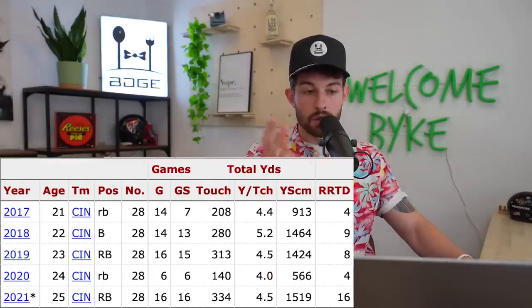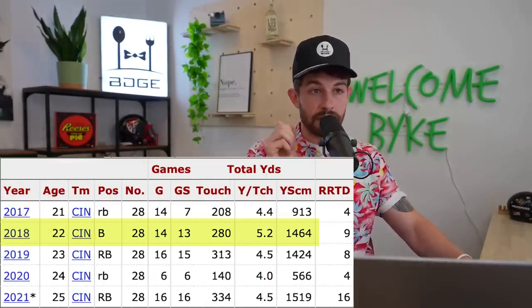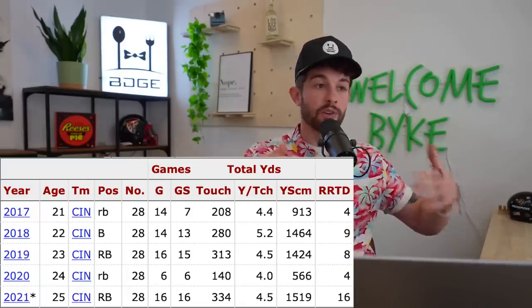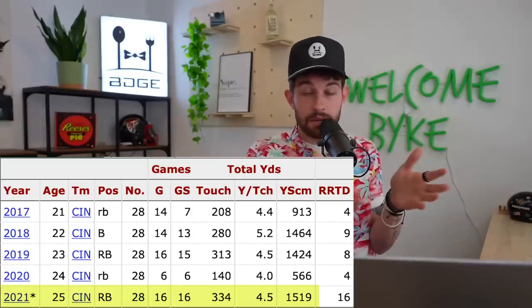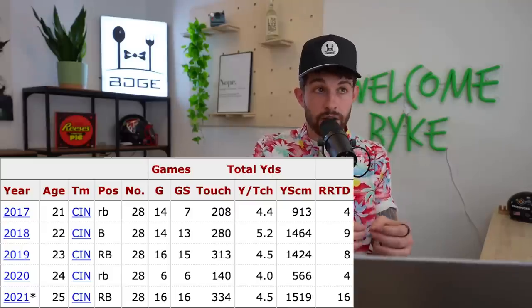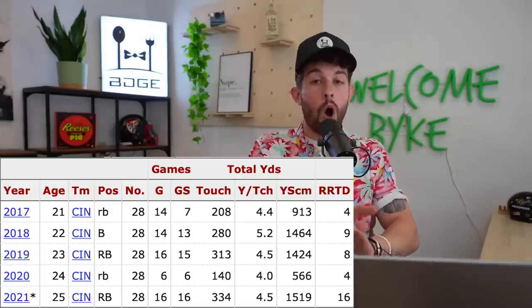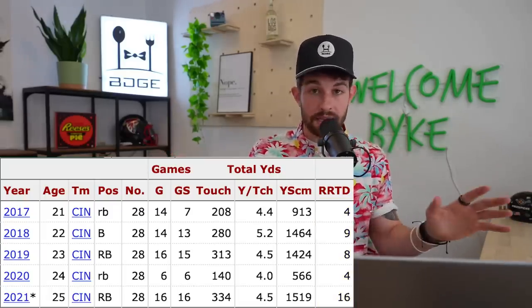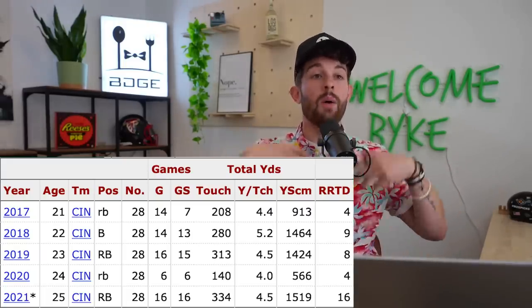If you're not catching passes, you need to be in a very good offense with a lot of early down volume. What changed for Mixon is he had the exact same role, the exact same pass-catching role — 3.5 targets per game versus 3 targets per game — he didn't get any more passing work. The only thing that changed was he scored 16 touchdowns in 2021 because the team was just way better and afforded him way more scoring opportunities.